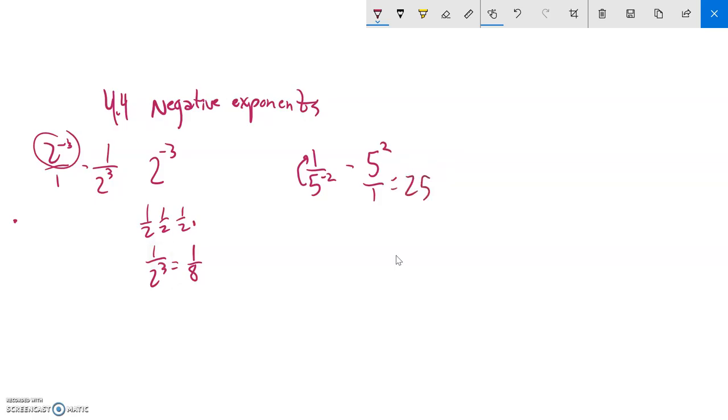If you think of it strictly as a fraction, you have 1 divided by 1 over 5 squared. And when you divide by a fraction, you flip the fraction and multiply. And it gets you to 25.